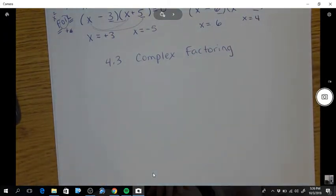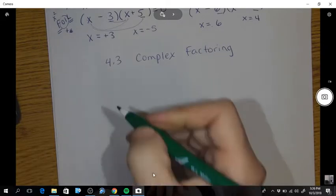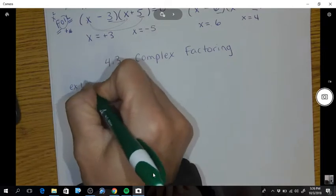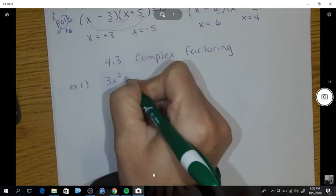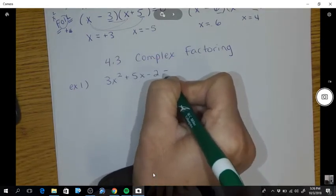Okay, so complex factoring is when it leads with a non-1 x squared. So for example, 3x squared plus 5x minus 2 equals 0.